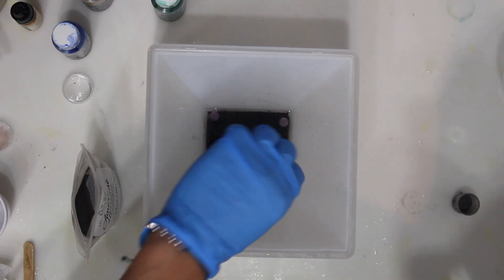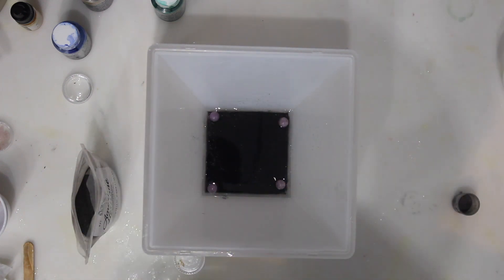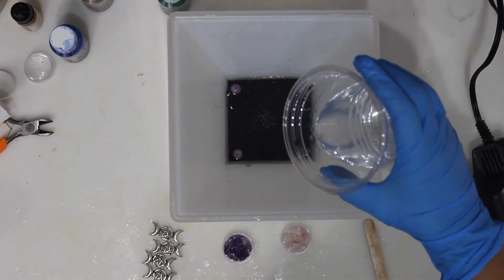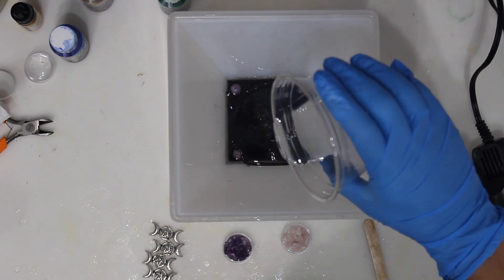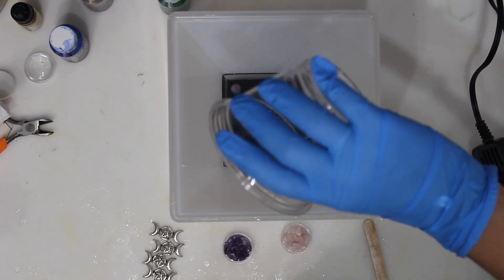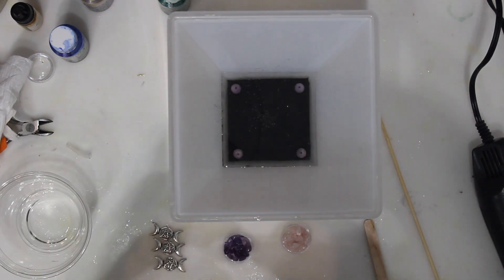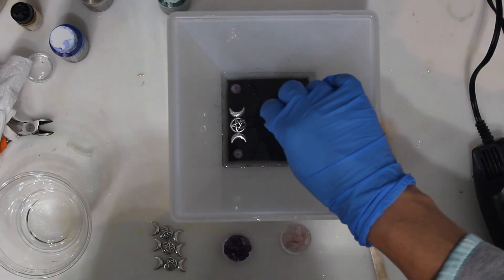After this layer has hardened, I will pour clear resin and place four moon symbol charms, amethyst stones, and rainbow moonstone.